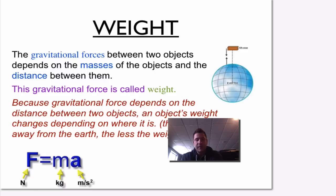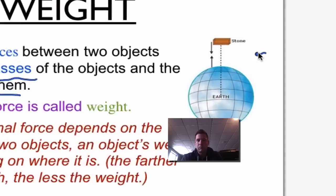He said that the gravitational forces between two objects depend on a few things: one, the masses of the object, and two, the distance between them. I've got a picture here. We show a stone up top, and then the earth.